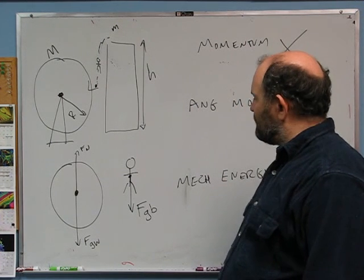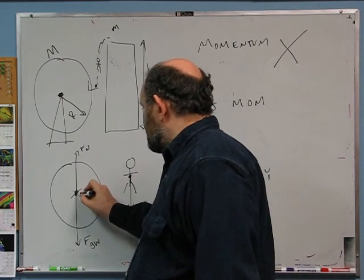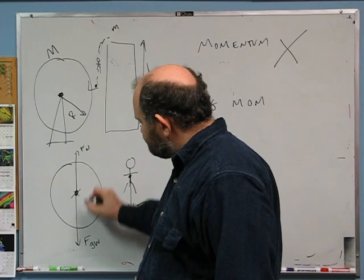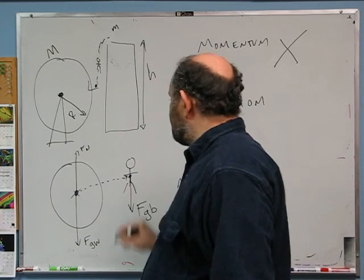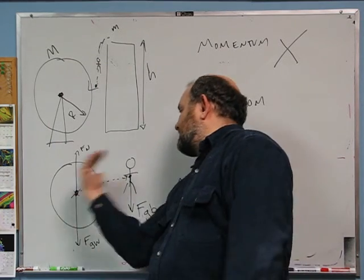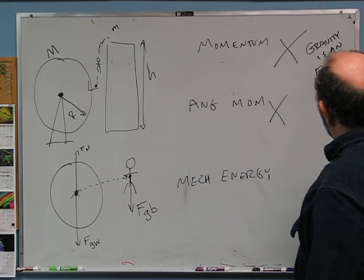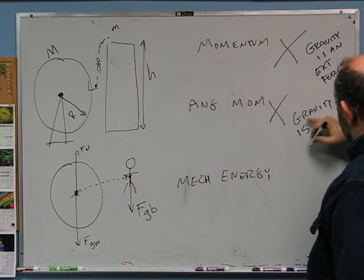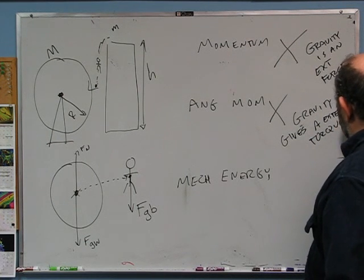For angular momentum: are there any external torques? We want to measure torques about the center of the Ferris wheel. Both the normal force and the gravitational force of the wheel, which act at the center, have no lever arm — so no torque. But the force of gravity on James Bond has a lever arm of basically the radius of the wheel, because he'll land at the edge. So there is an external torque from gravity on Bond, meaning angular momentum will not be conserved while James Bond is falling.